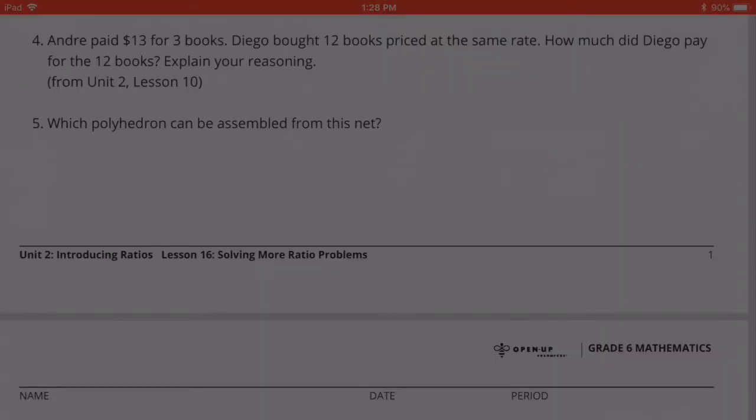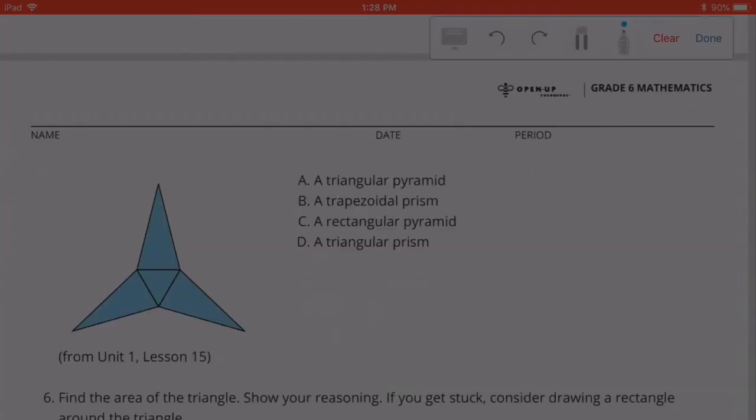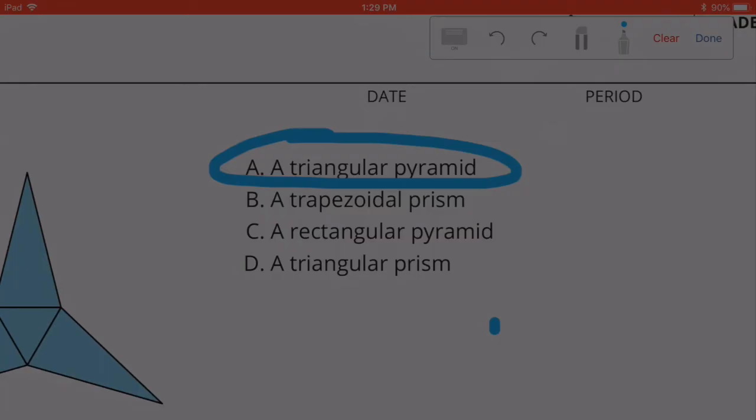Number 5: Which polyhedron can be assembled from this net? Well, it's going to have a triangular-shaped base. It's going to form a pyramid, a triangular pyramid.